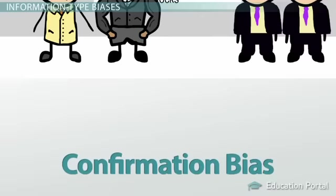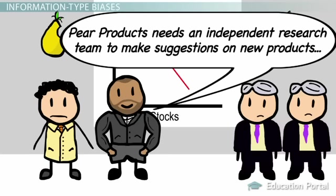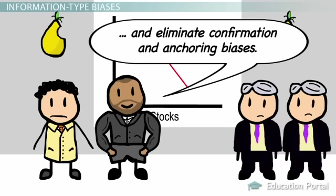They were guilty of confirmation bias, which is when managers only use data that will confirm their decision. The team spun the facts to support the new product and ended up with a failure. The consultant felt that Pair Products needed an independent research team to make suggestions on new products and eliminate confirmation and anchoring biases.